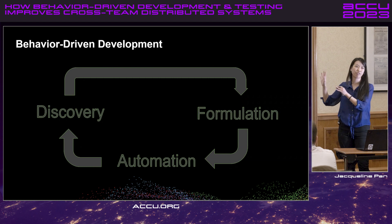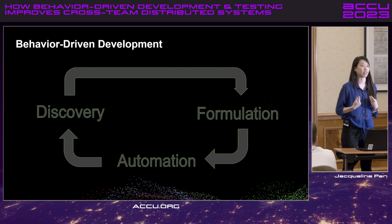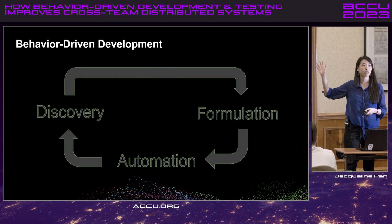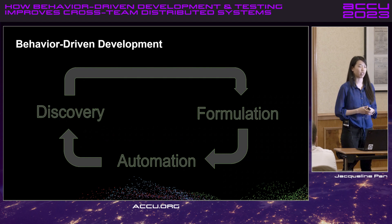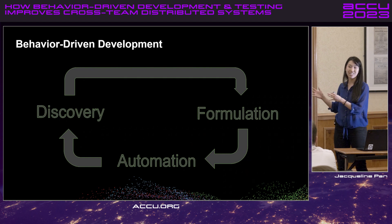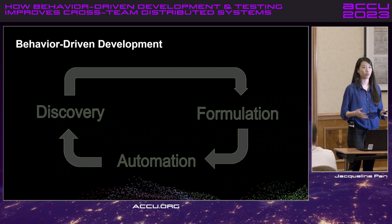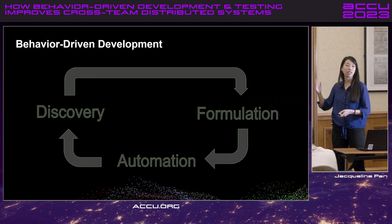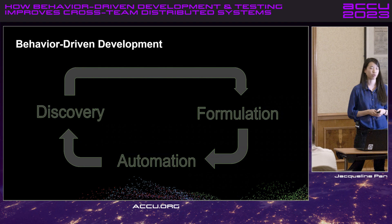I think about these three phases from the perspective of three questions I ask myself when I build new software. The discovery phase is about what it can do — what are you trying to build, what is the opportunity there for your software? Formulation is what it should do — you've agreed about what you want to build, but what is it supposed to do? And automation is what it actually does — making sure that you have understanding of what your software is doing.